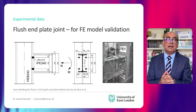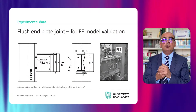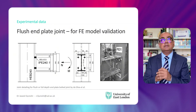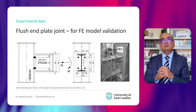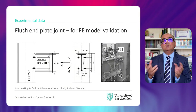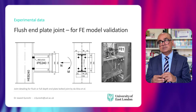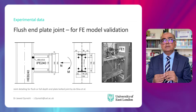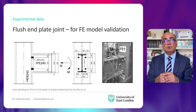This is the joint detailing for the first experiment used for validation. We first validated the model against a set of experiments, then moved on to carry out a parametric study. This is the full depth flush end plate joint testing done by Da Silva. The column is HEB 240 (240×240, 85 kg/m), with flange thickness 9.8 mm and web thickness 10 mm. The beam is IPE 240 (240×120, 31 kg/m), with flange thickness 9.8 mm and web thickness 6.2 mm. M20 grade 10.9 bolts were used, steel plate thickness is 15 mm, and S275 steel was used for all members.